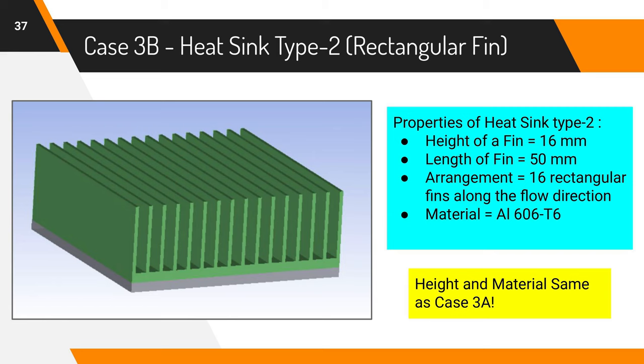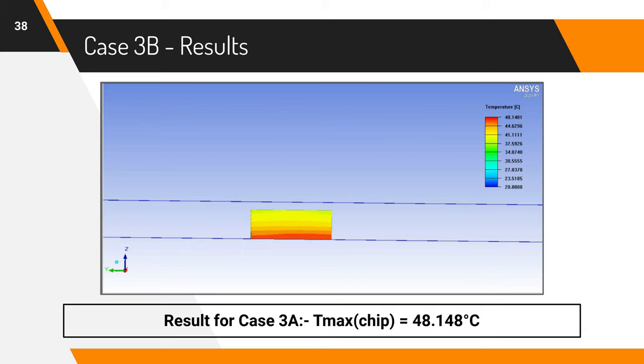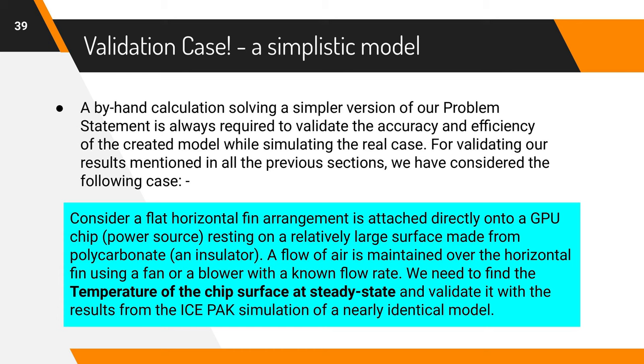The final case is case 3B having rectangular fins. One can note that the height and material are kept the same. This is our best configuration, yielding the chip's temperature to be only 48 degrees Celsius. But to conclude this successfully, we need to perform some in-hand calculations and match it with the software sensors. This is the validation and is usually done for a simpler problem.